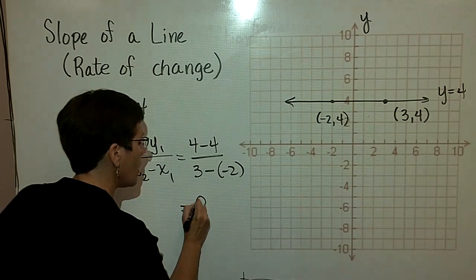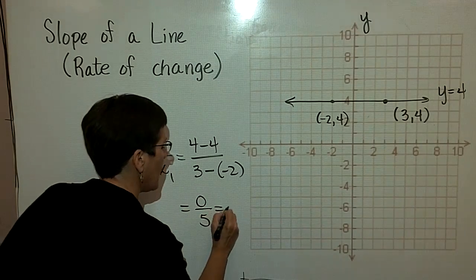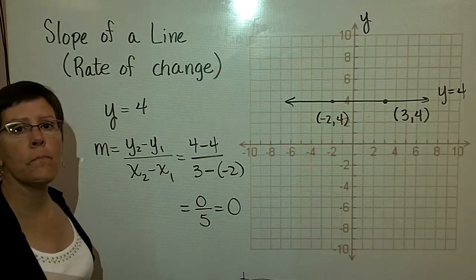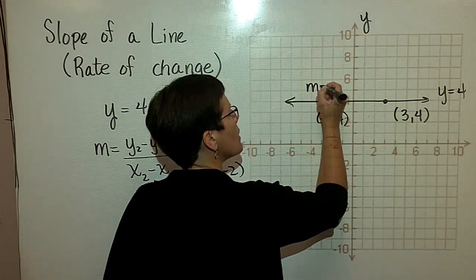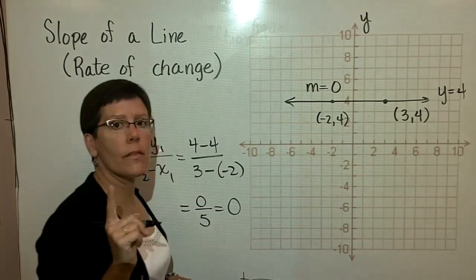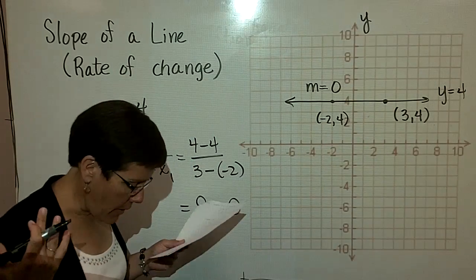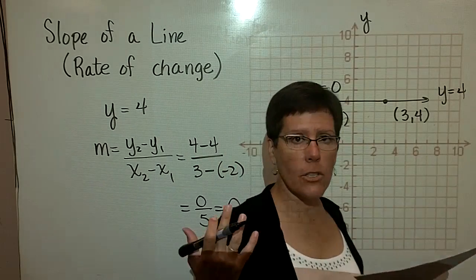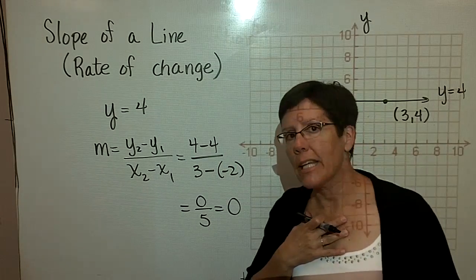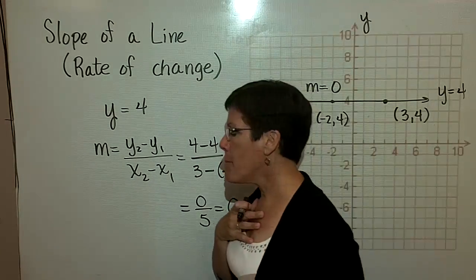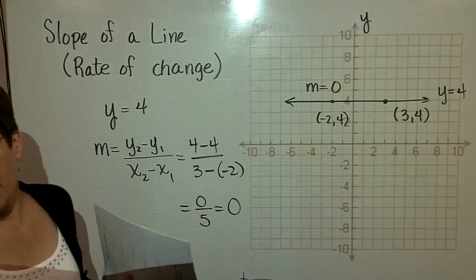So I will have 0 divided by 5, and that is equal to 0. The slope of this line is 0. The way I remember that is to say to myself, it's flat. If I'm walking across a flat surface, it's very easy. It doesn't cause me any extra exertion. It's equal to 0.